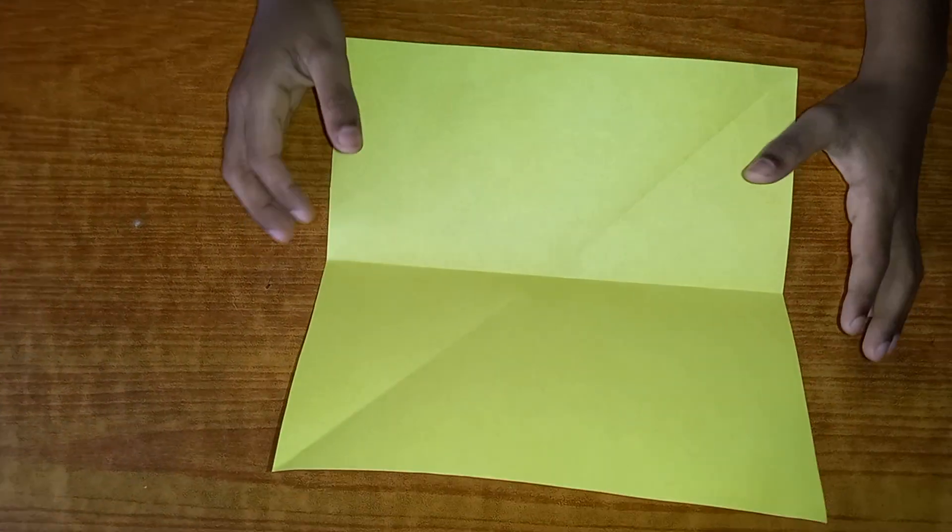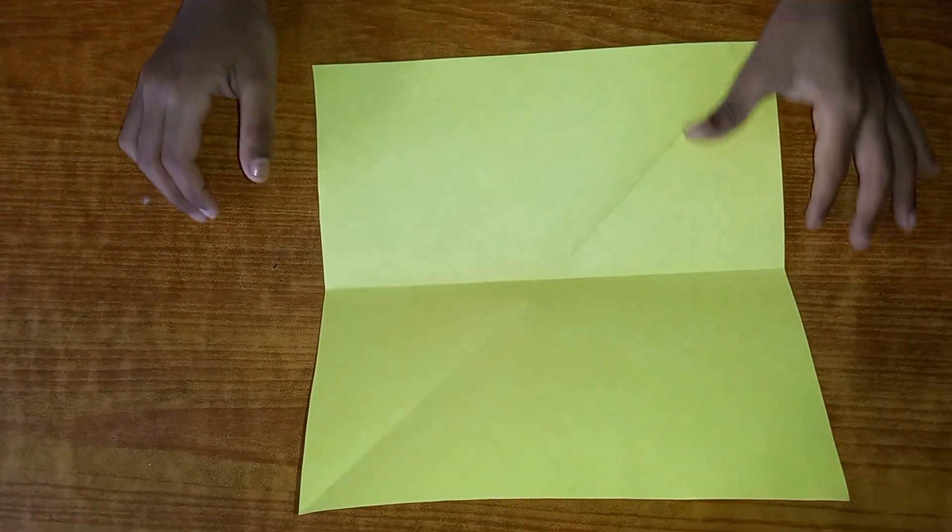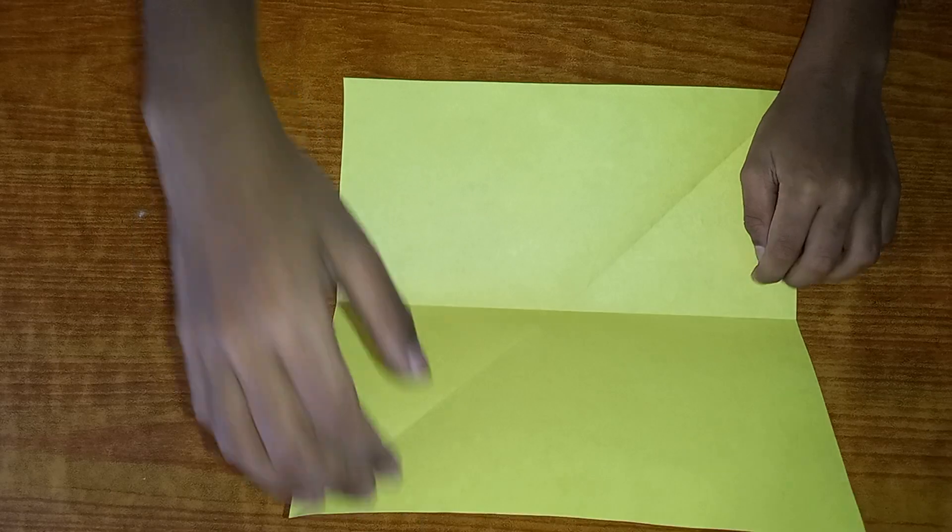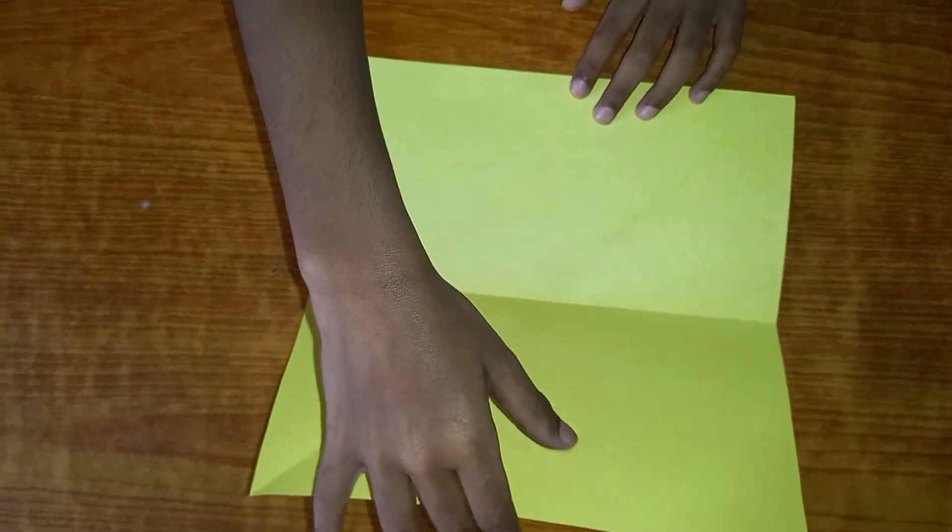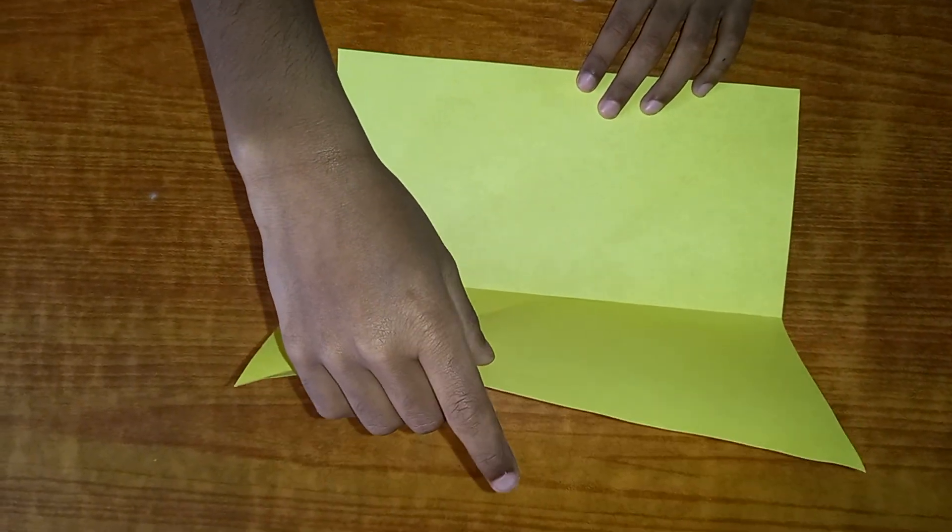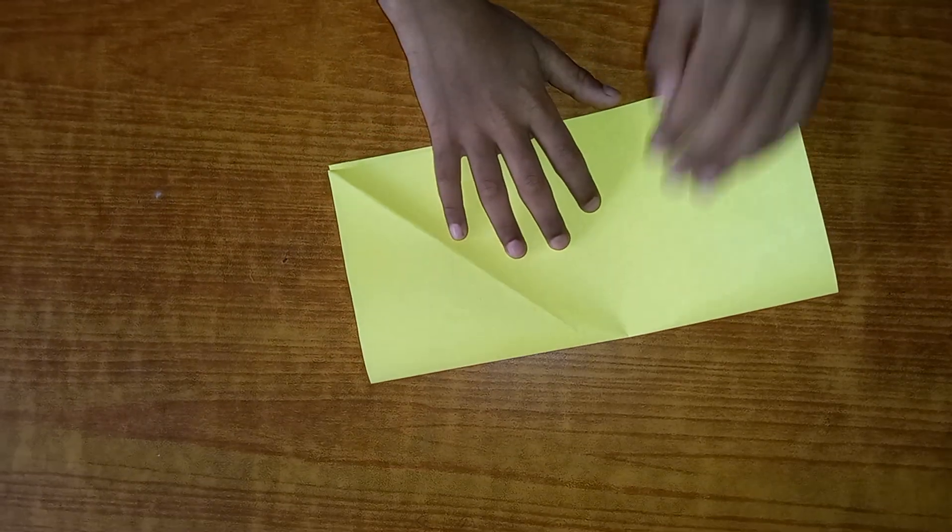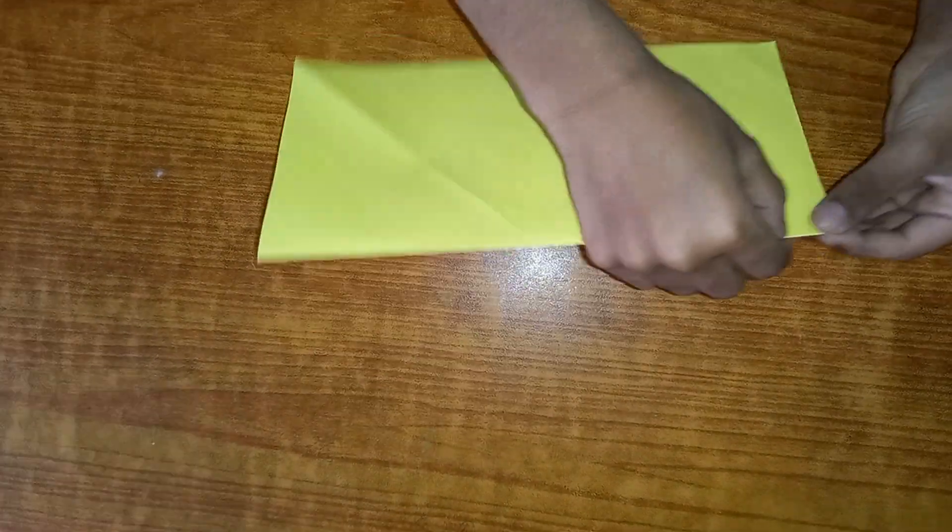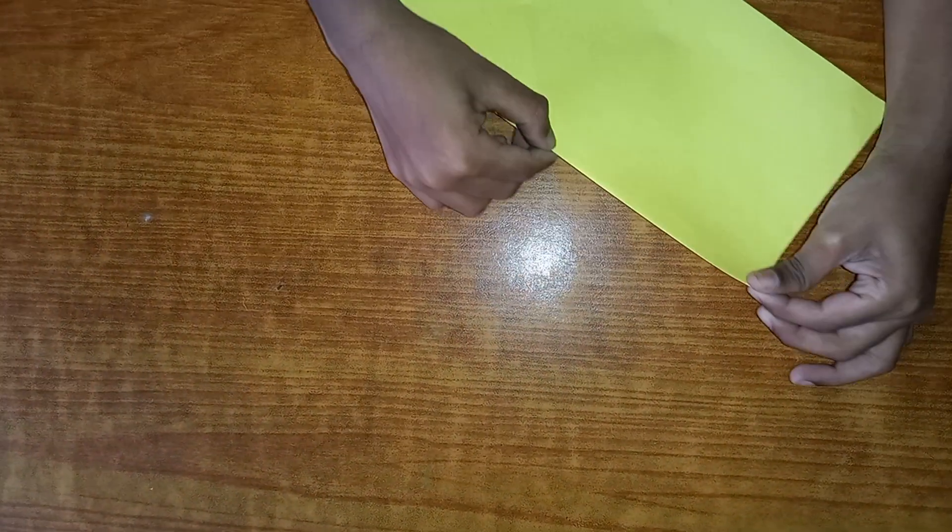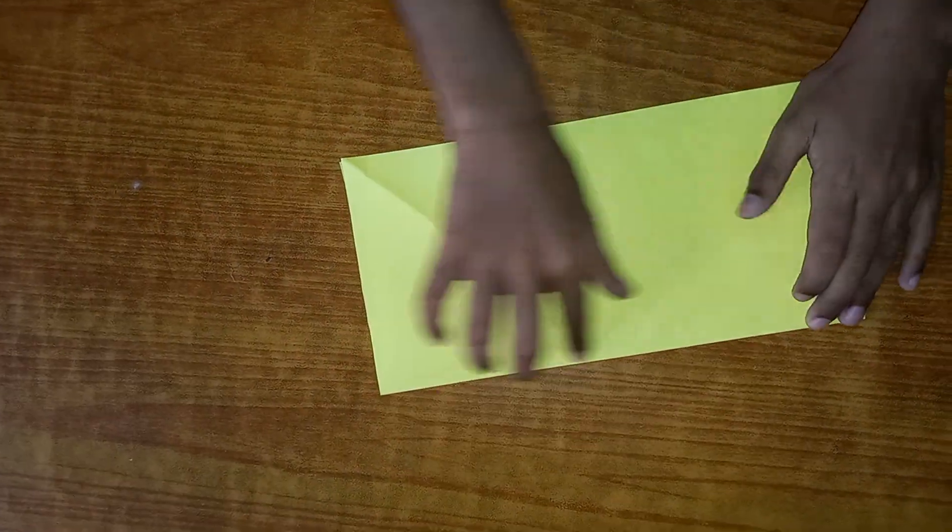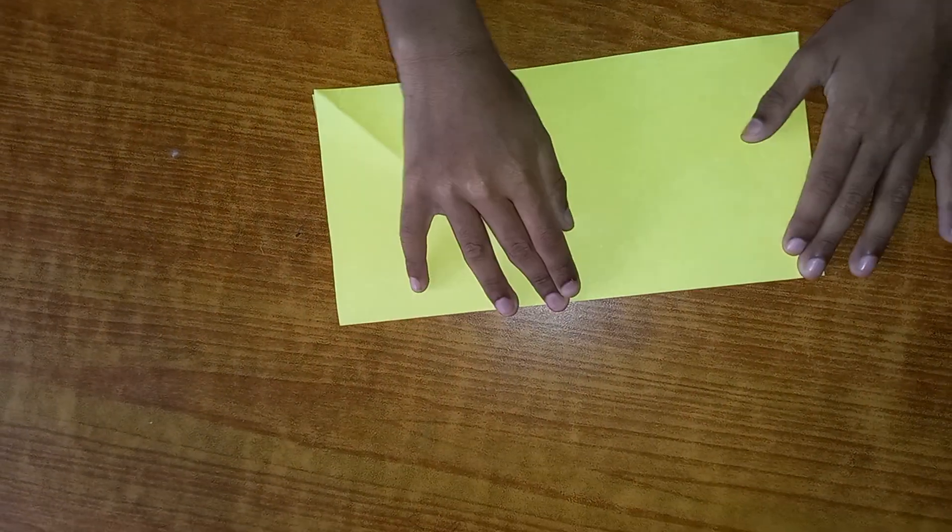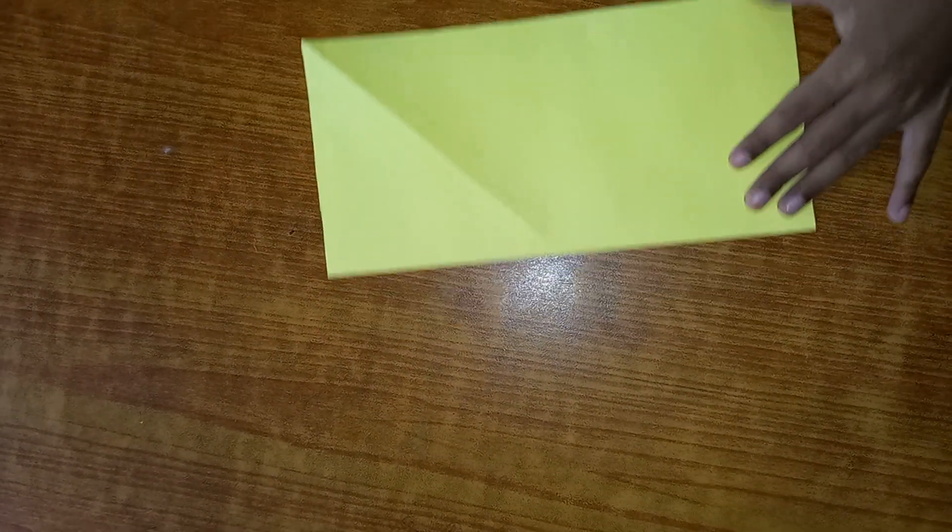So we need a square paper and we are going to fold it like this, vertically. It should come like this. Actually, it's a square. Now what we're going to do is cut it.